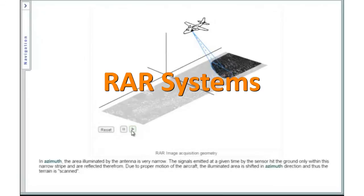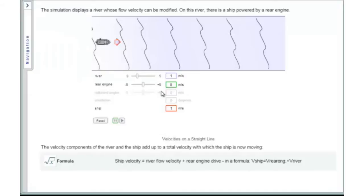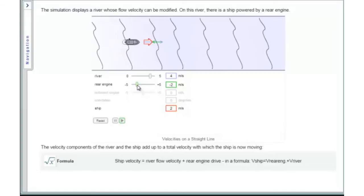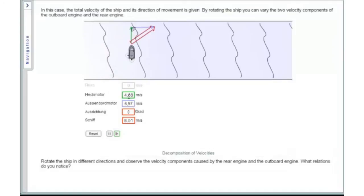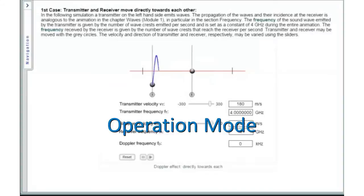SAR Basics: This e-learning module includes four e-learning sets, starting with the SAR principles around the Doppler effect and guiding right up to the procedures of SAR image interpretation and object-oriented interpretation. The modules of this second e-learning course are: The Doppler effect, SAR resolution, operating mode, and SAR processing.